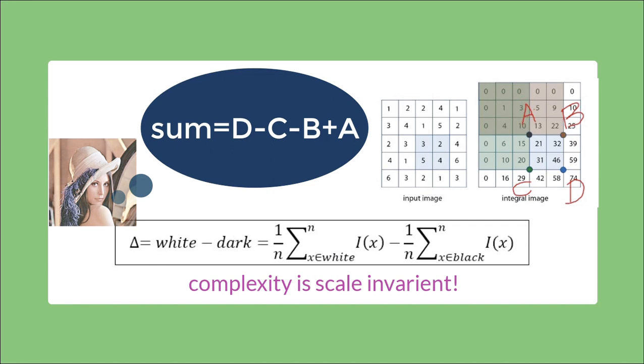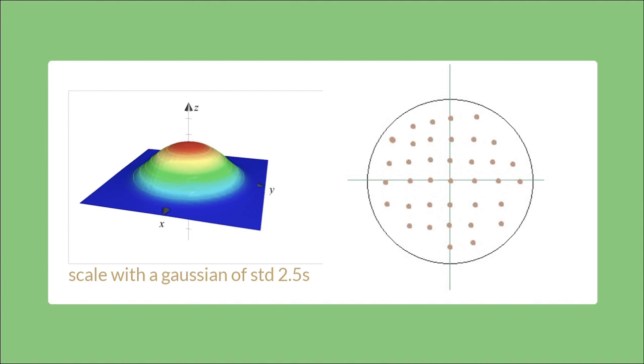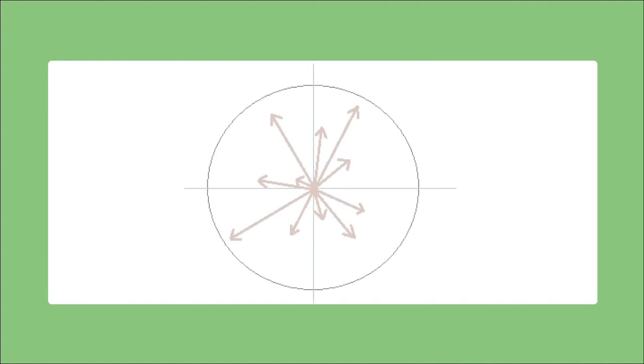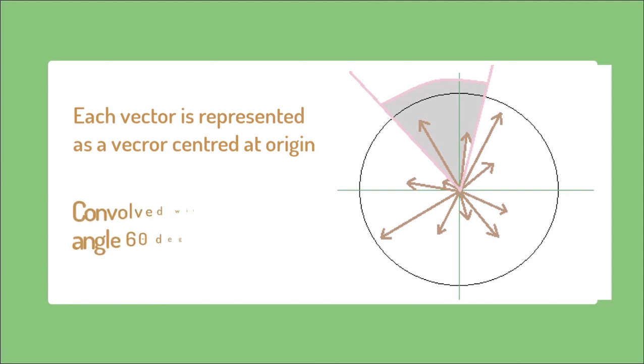Due to its simplicity, this process happens in constant time as summation of any rectangular region can be found using only 4 operations using an integral image. Notice that due to sampling of the sub-regions, this process is invariant to the scale of our key point, as we get fixed number of gradients per key point. These gradients are then scaled by a Gaussian of standard deviation 2.5s centered at the key point, so as to give more importance to the points near the center. Now, each gradient pair is represented as a vector centered at the origin. This circle is convolved with a sector of angle 60 degrees. Each summation results in one vector. And the longest among these vectors is chosen as the orientation of our key point.